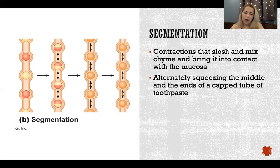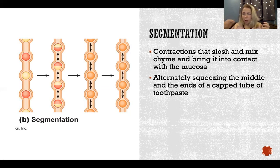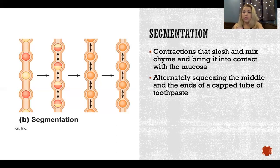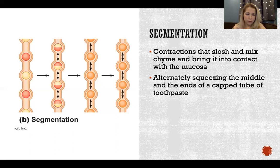We have the example of trying to mix up contents in a tube of toothpaste. If I keep the toothpaste closed and squeeze from the middle, then from the ends, then the middle, then the ends, I'm going to thoroughly mix up the contents in that tube of toothpaste. And that's what segmentation is doing, as we see in the picture here.